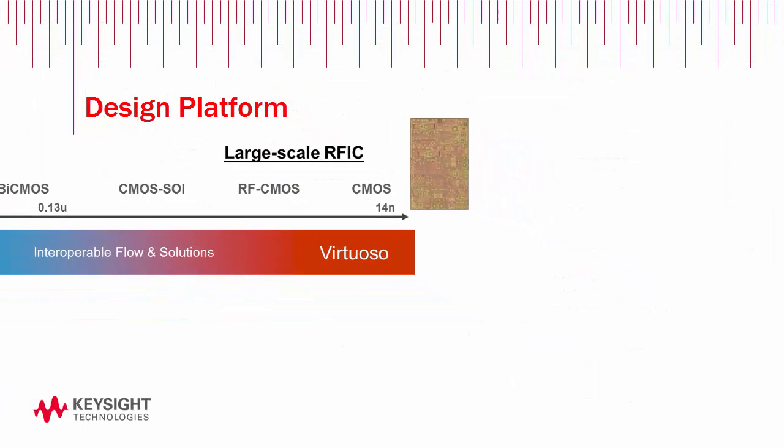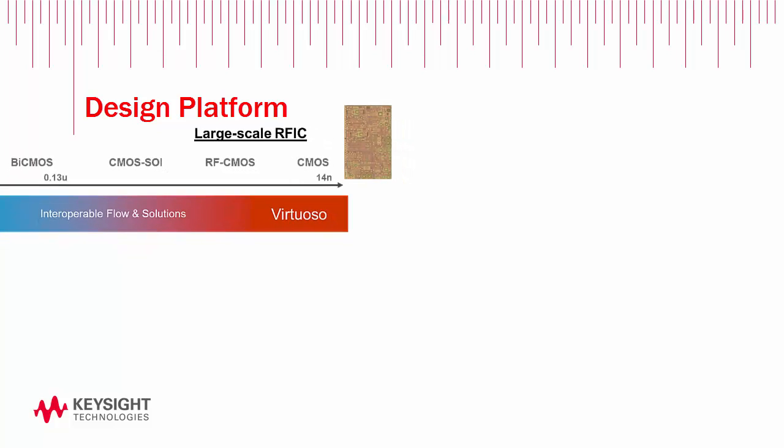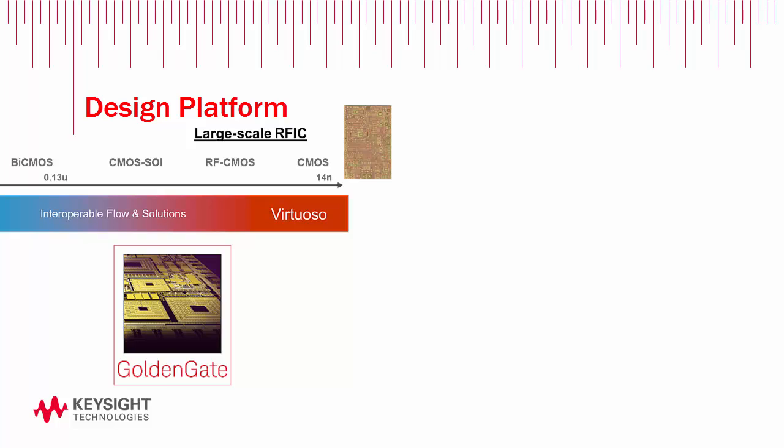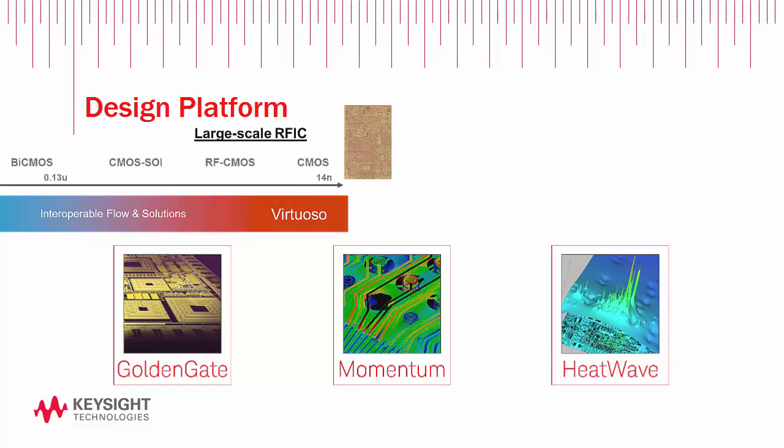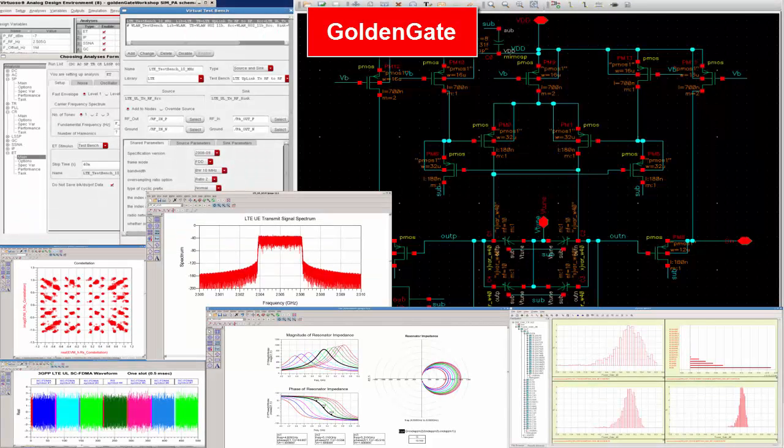In Virtuoso, designers access Keysight's integrated RF circuit simulator, Golden Gate, 3D planar EM solver Momentum, and thermal analysis technology HeatWave in order to design RFICs with Golden Gate's advanced simulation and post-processing capabilities.